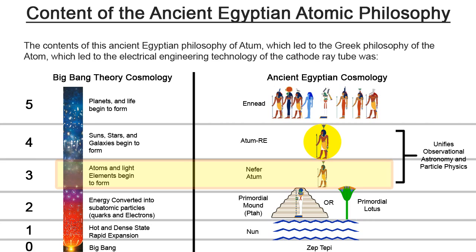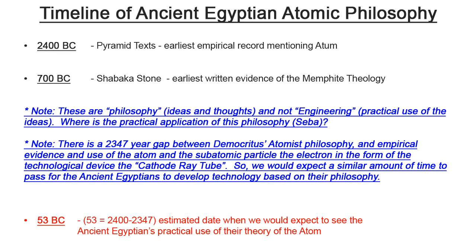In ancient Egyptian cosmology, Atum becomes Atum-Ra, symbolizing the sun, which corresponds to the point in the Big Bang theory where suns and stars are formed. The symbolism of the Neter Atum unifies observational astronomy and particle physics like a true scientific cosmology. We have a timeline of ancient Egyptian atomic philosophy: 2400 BC as the earliest empirical evidence of Atum, and 700 BC as the earliest empirical evidence of the Memphite theology. Importantly, both of these are just philosophies — not technologies — and it is the practical application of that atomic philosophy which we are looking for. Recall that it took 2,347 years between Democritus' atomist philosophy and the development of the cathode ray tube.